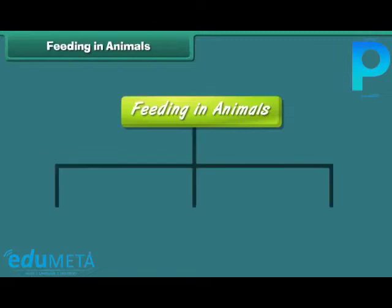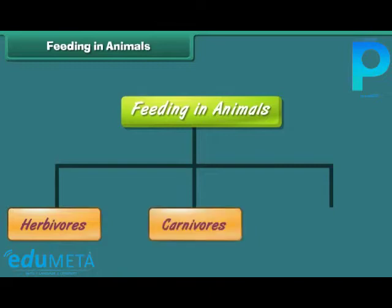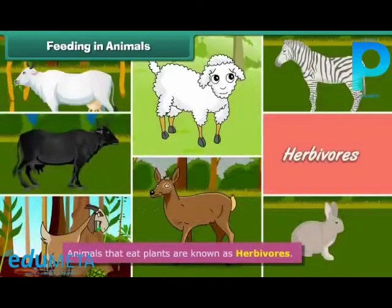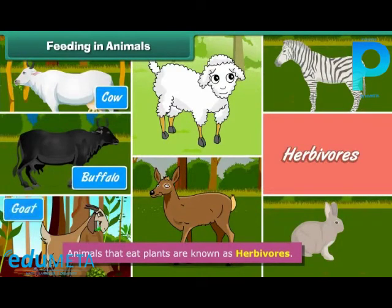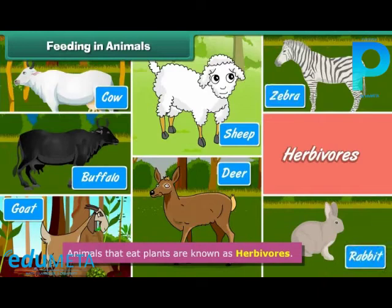On the basis of type of food, animals are of three types. Herbivorous animals are those that eat plants. Examples include cow, buffalo, goat, sheep, deer, zebra, and rabbits.